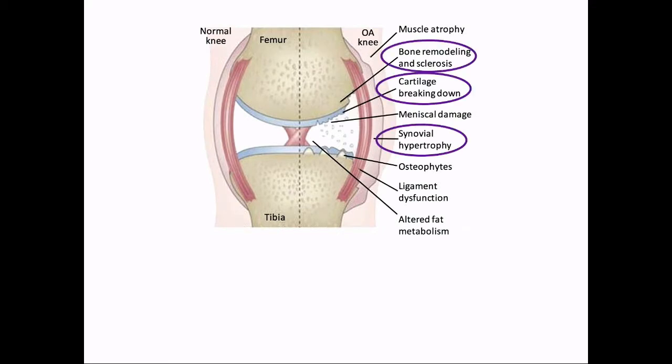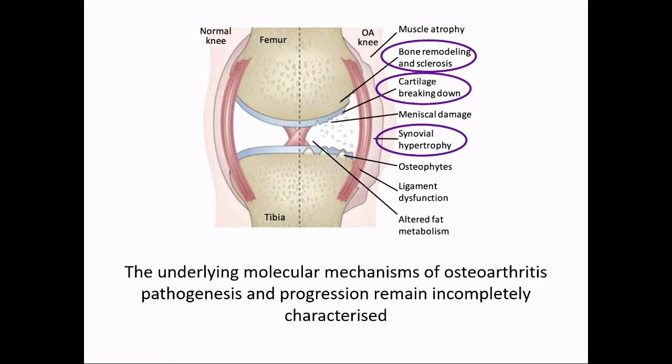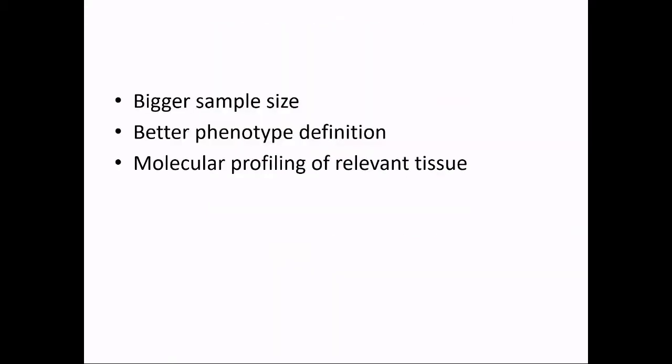We know from physiological studies that bone remodeling, cartilage breaking down, and synovial hypertrophy are important in the natural history of disease. But the underlying molecular mechanisms of osteoarthritis — both of pathogenesis and progression — remain incompletely characterized. And that's what motivates us to study this disease. We're doing this by employing a three-pronged attack to the problem: bigger sample sizes, better phenotype definition, and molecular profiling of relevant tissue.